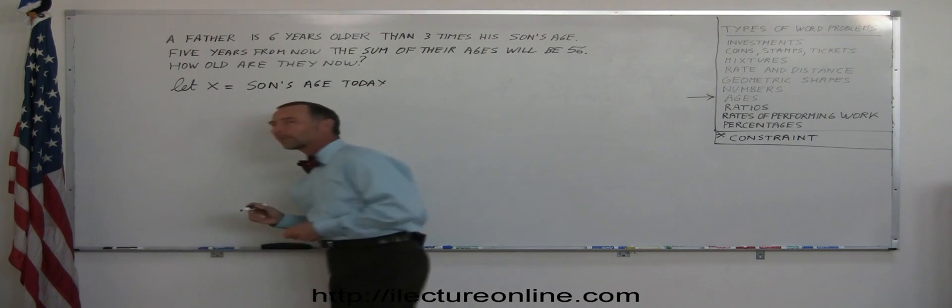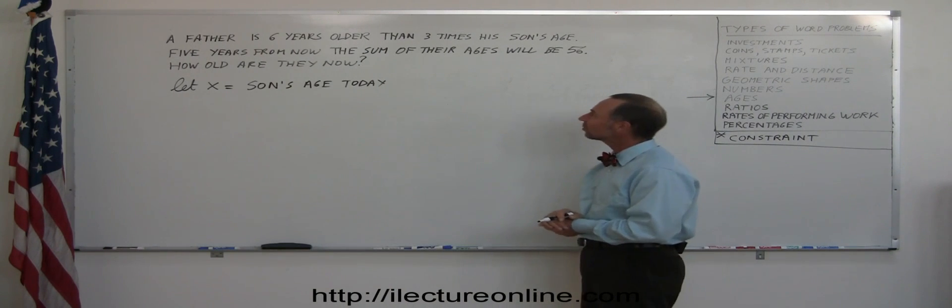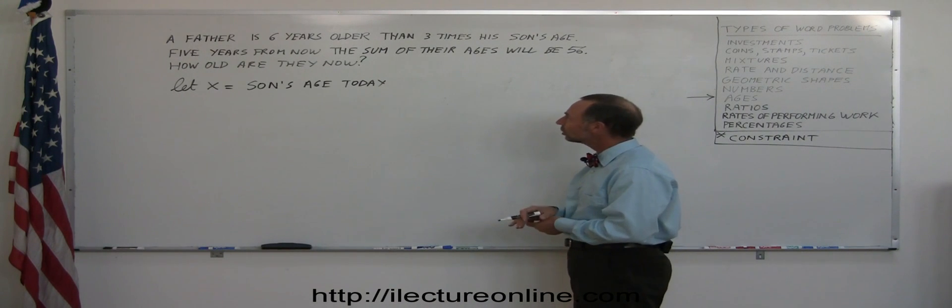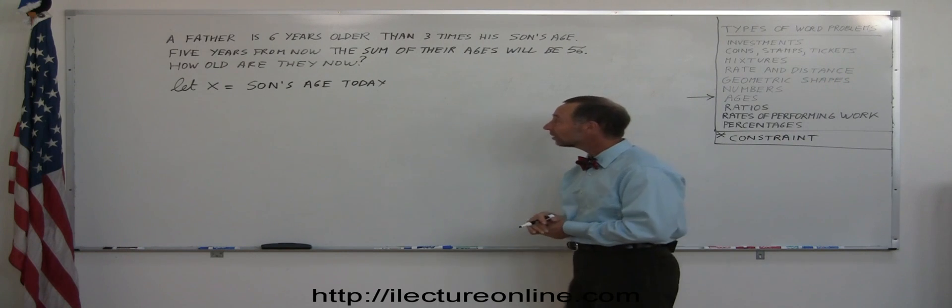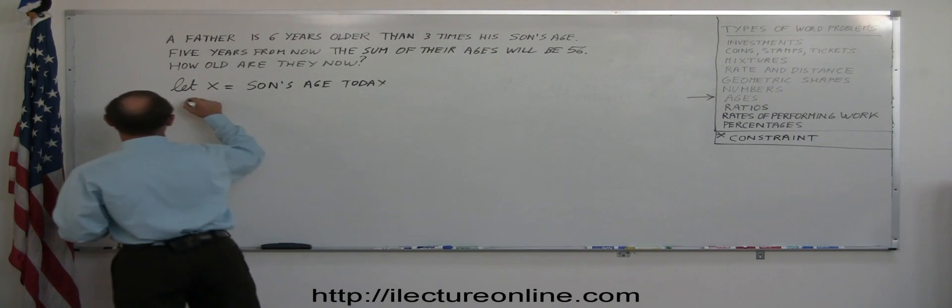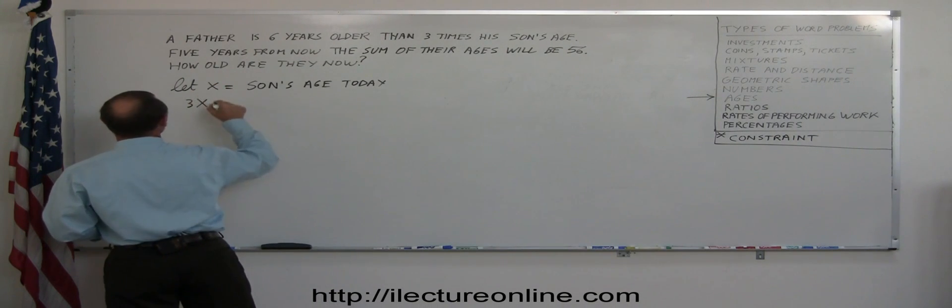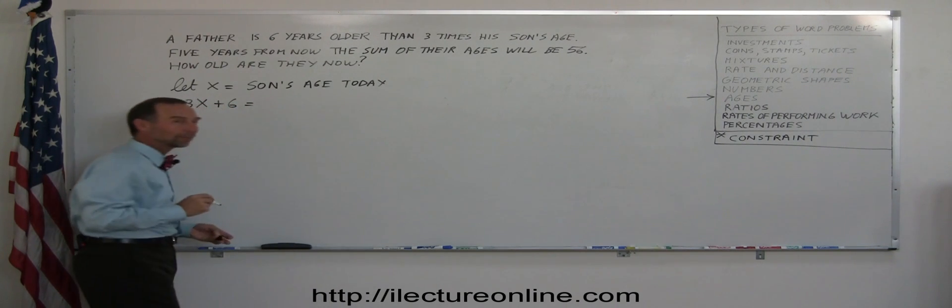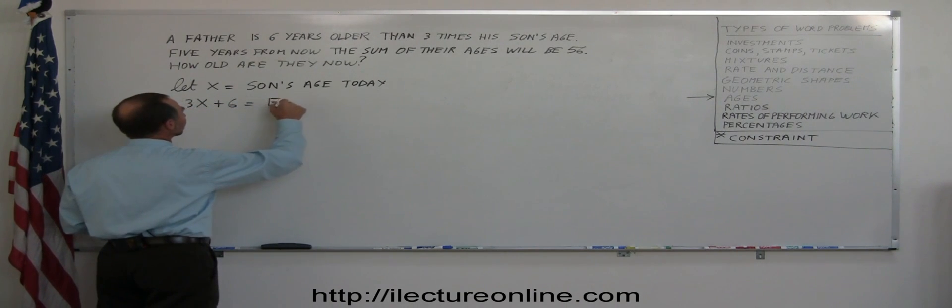And how do we represent the father's age in terms of X? Well, it says here that the father is six years older than three times the son's age. So three times the son's age is 3X. And six years older would be plus six. And so this is a good representation of the father's age today.